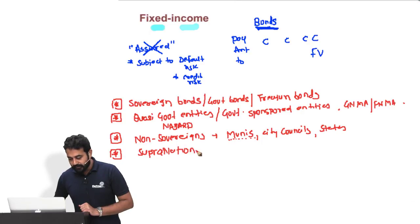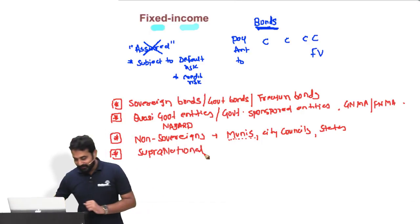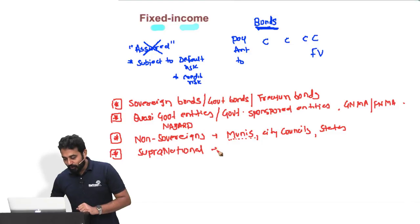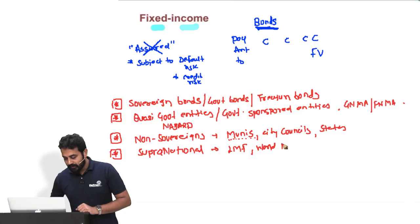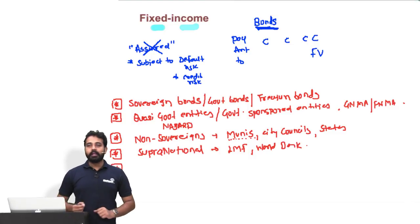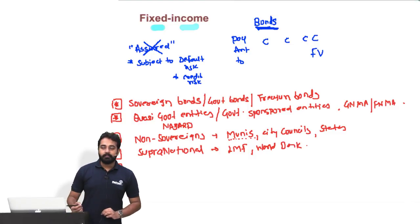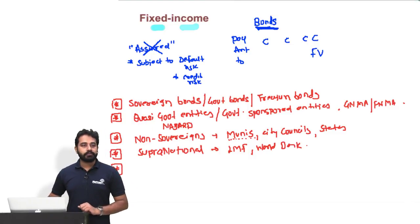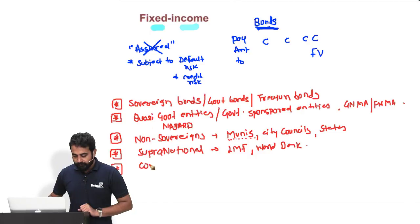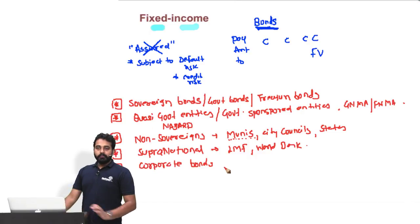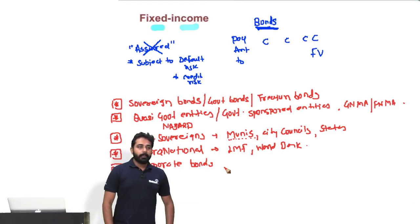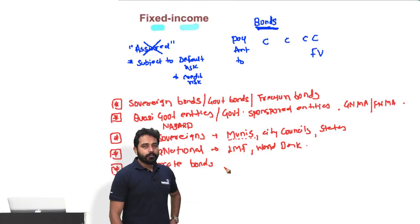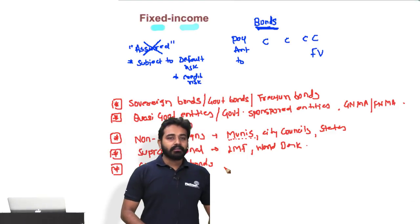There are also bonds issued by supranational entities — for example, bonds issued by the IMF or the World Bank. Who else plays in this market? We have corporate bonds. From a corporate perspective, what would they prefer — bank borrowing or issuance of bonds? Which will be cheaper?